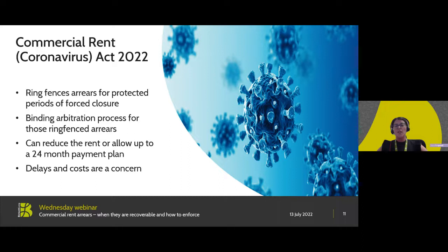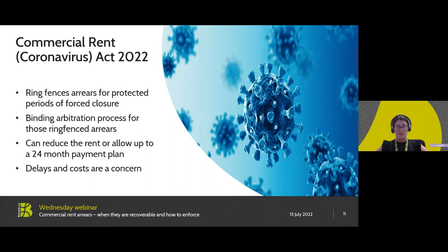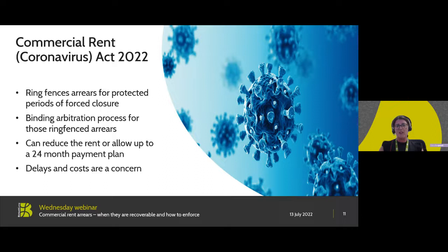Periods of forced closure relevant to this Act commence at 2pm on the 21st of March 2020 and end on or before 11.55pm on the 18th of July 2021 for business tenancies in England, or 6am on the 7th of August 2021 for business tenancies in Wales. It is irrelevant for the purposes of this Act whether a business chose to close during periods outside of those mentioned — it is only periods of forced closure that gain protection from the Act. This is a very important distinction, as many businesses felt forced to close due to reduced trading hours or restrictions on eating and drinking inside premises, but only those specific dates are relevant to this procedure.